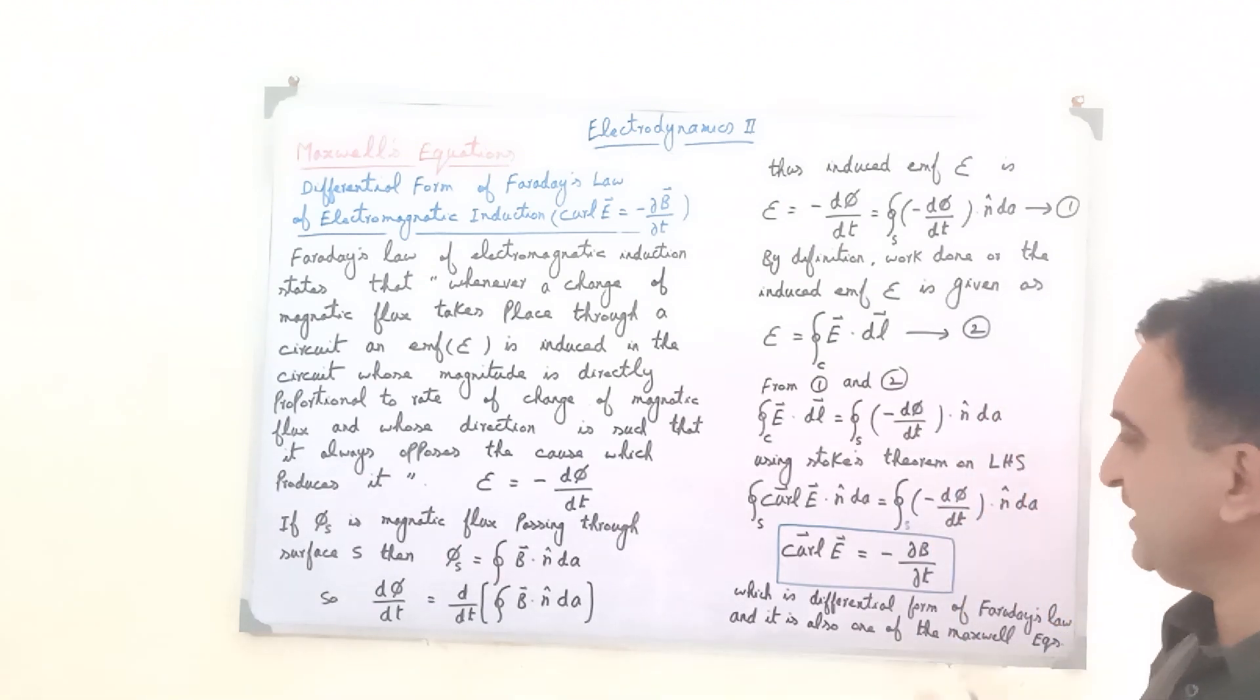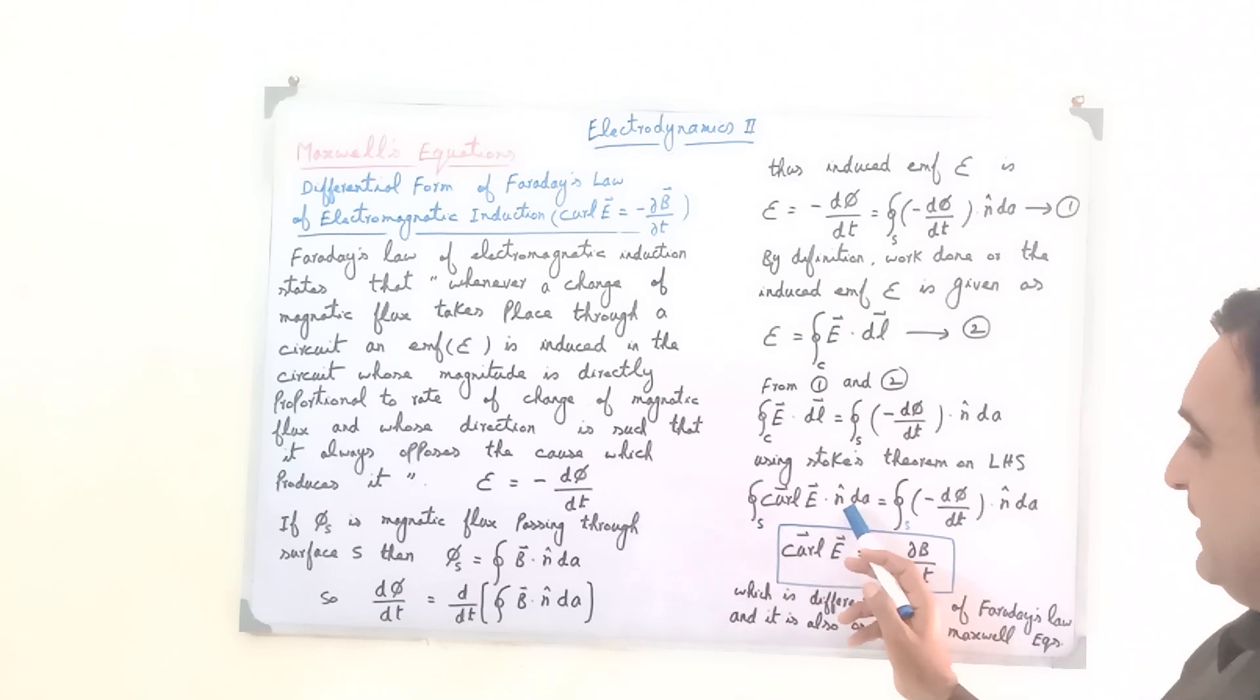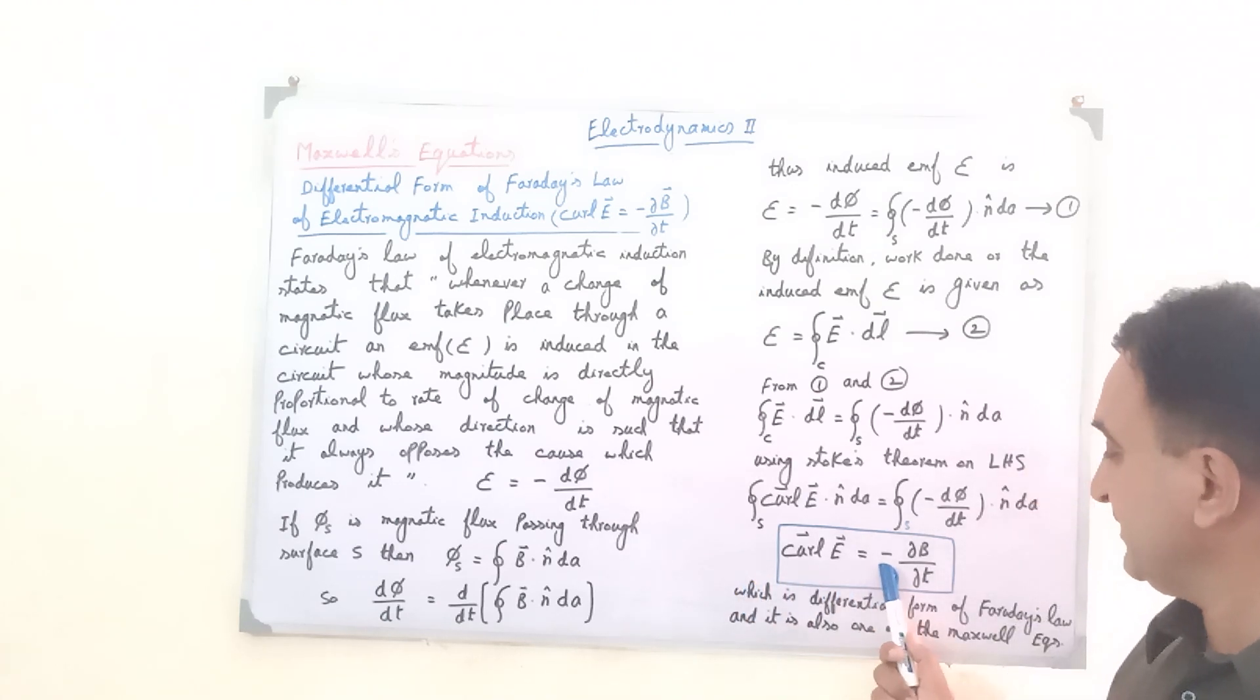Cancel the integral and n unit vector dA on both sides. We get curl E is equal to minus partial B by partial t, which is the differential form of Faraday's law of electromagnetic induction.